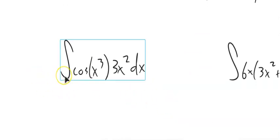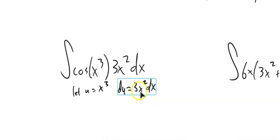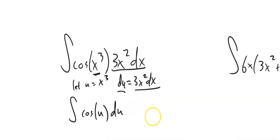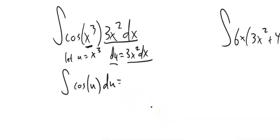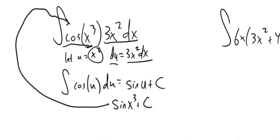This first one: I've got the integral of cosine(x³) times 3x² dx. I notice I have x³ inside cosine. So let u = x³. The derivative of u is 3x² dx. So I substitute: cosine(u) · 3x² dx becomes cosine(u) du. The integral of cosine is sine, so I get sine(u) + C. Remembering that u = x³, the answer is sin(x³) + C. If you're ever unsure, take the derivative of this and you should get the original back.